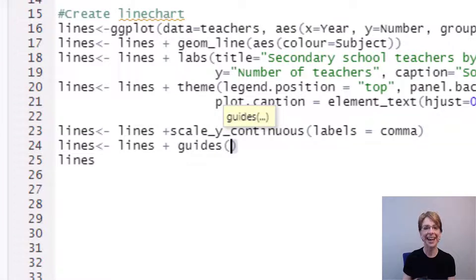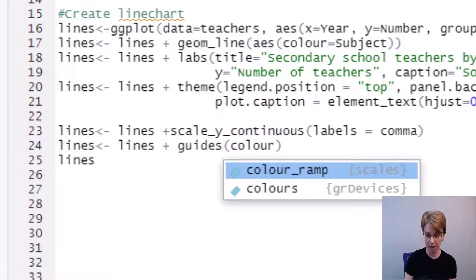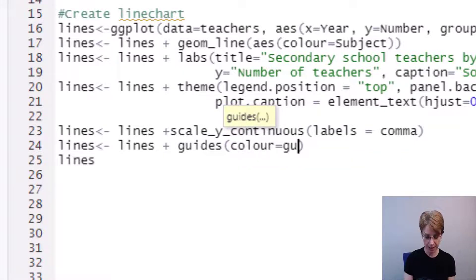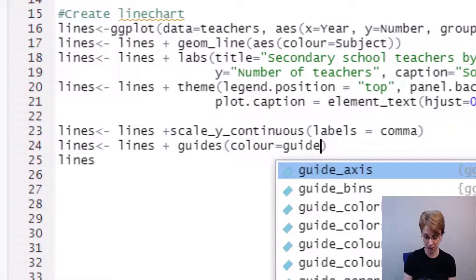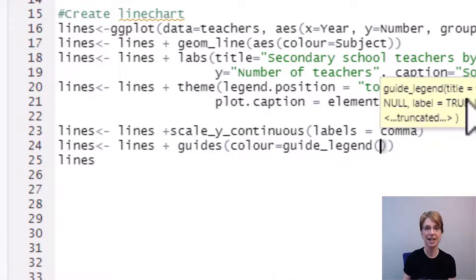Brackets inside guides as the aesthetic I used previously was colour I stick with that so I type colour equals and then I type in guide_legend and inside the brackets I will make some changes to make it easier to see I will insert the changes on a new row.